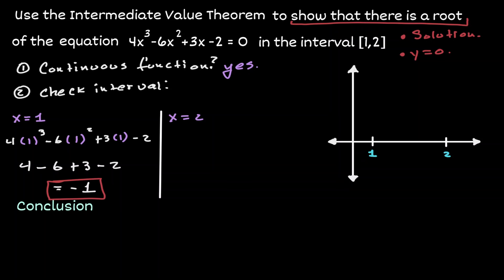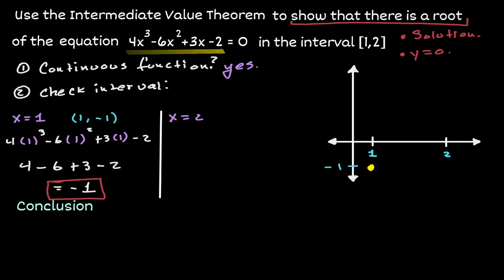Let's make sense of this result. When x is equivalent to 1, the y is equivalent to negative 1. So we know the function passes through the point (1, −1). Let's estimate this value on the graph on the right. Now let's evaluate the right-hand side of the interval when x is equivalent to 2, so let's plug 2 into the polynomial.